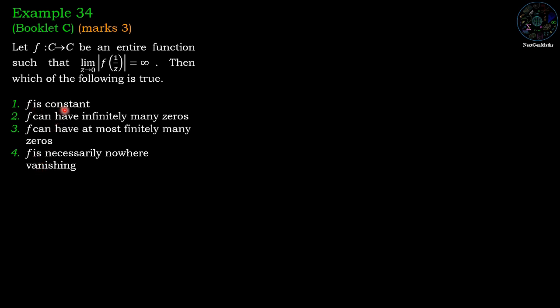Suppose first option is correct - f is constant, therefore f(z) = c, so f(1/z) = c. So lim(z→0) |1/z| has also constant value - it cannot be infinity. So first option is wrong without any calculation.